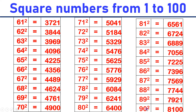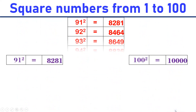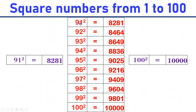90 square is equal to 8100. 91 square is equal to 8281. 92 square is equal to 8464. 93 square is equal to 8649. 94 square is equal to 8836.